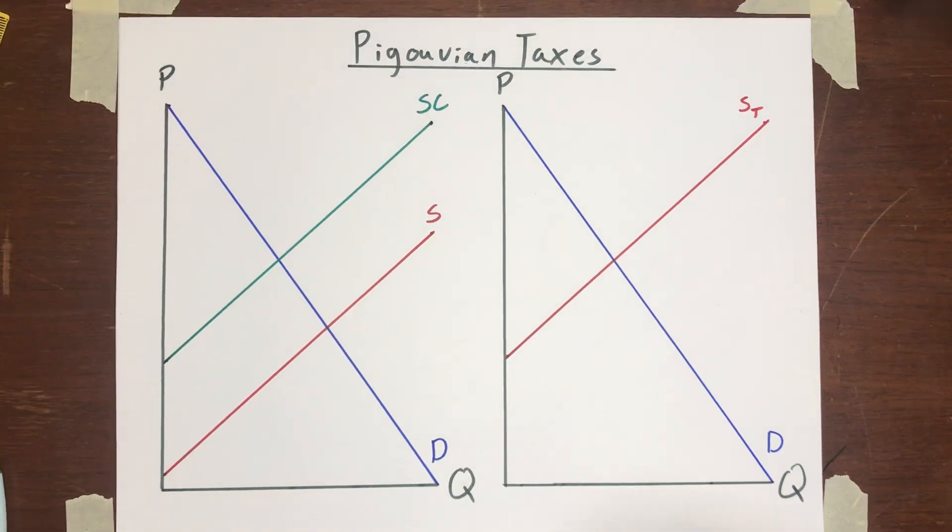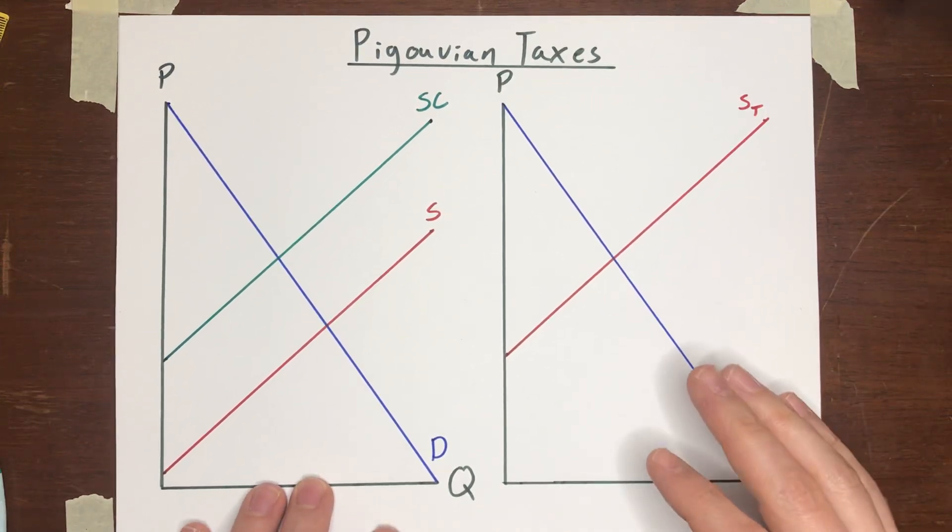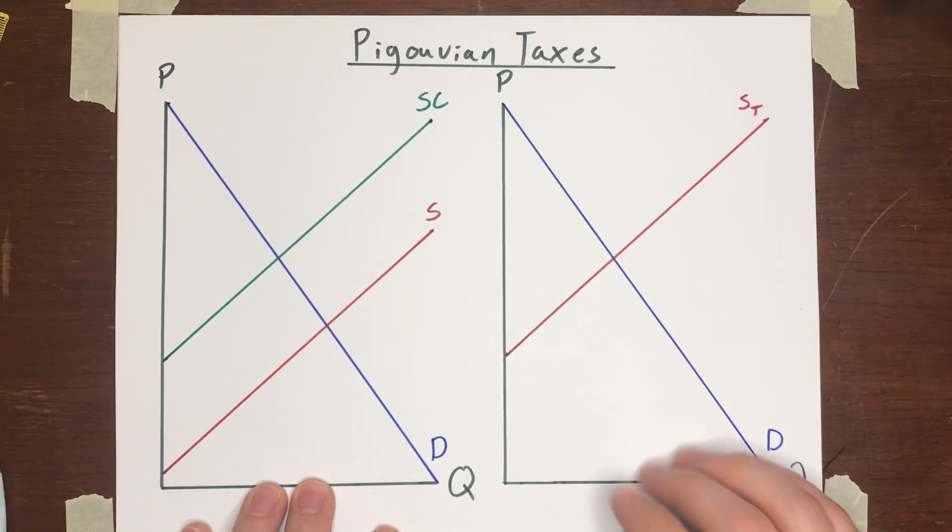In this video, I'm going to talk about Pigouvian taxes and Pigouvian subsidies, which are very simple policies that governments can use to correct markets that have externalities.